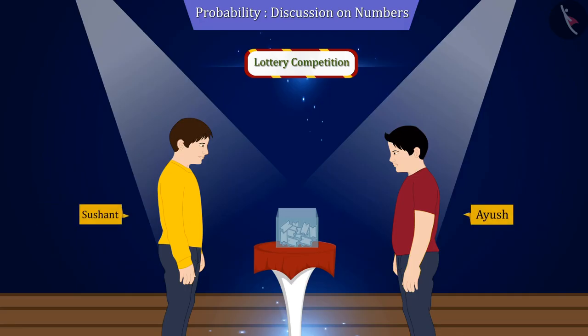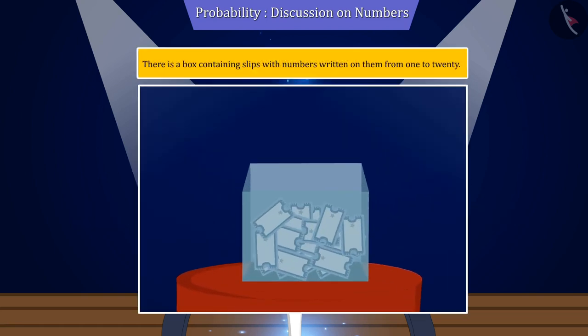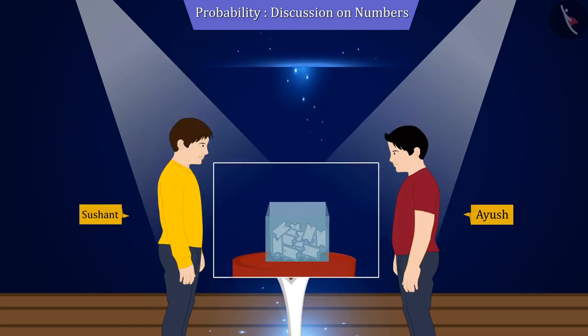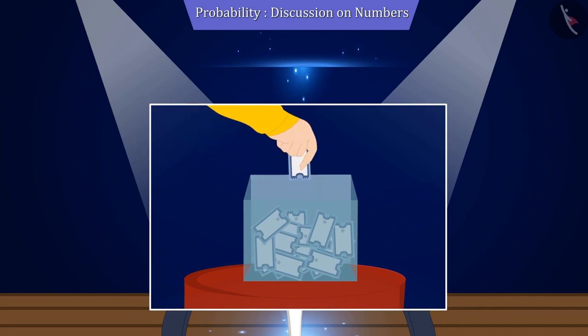Shushant and Ayush participate in a lottery competition. There is a box containing slips with numbers written on them from 1 to 20. If Shushant picks up any one slip out of those 20 slips, then what will be the probability of getting a multiple of 3?